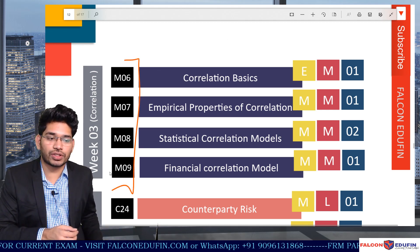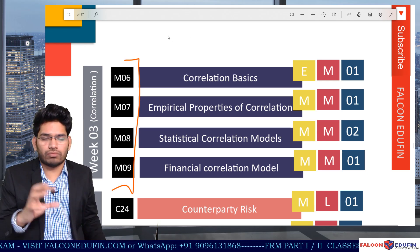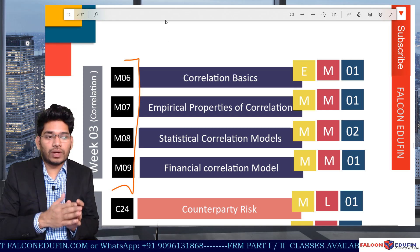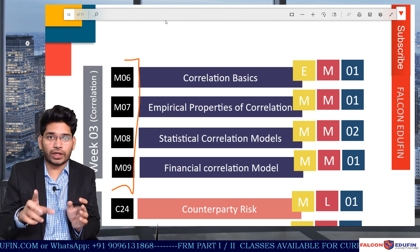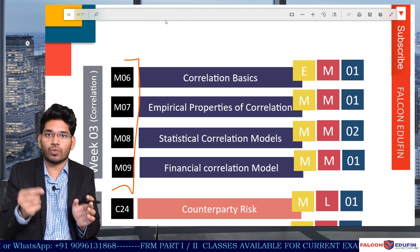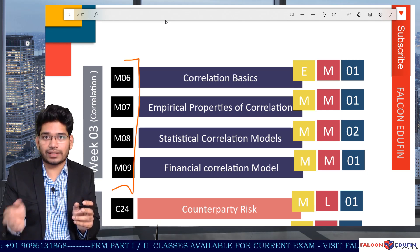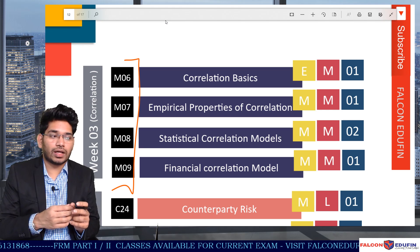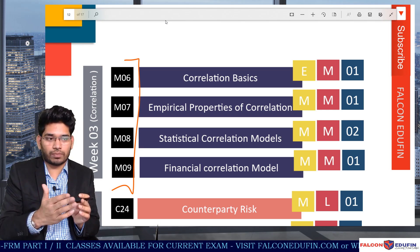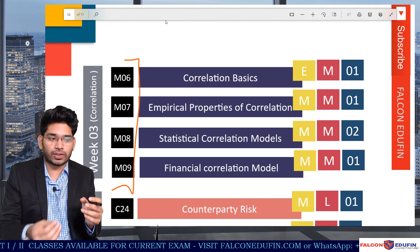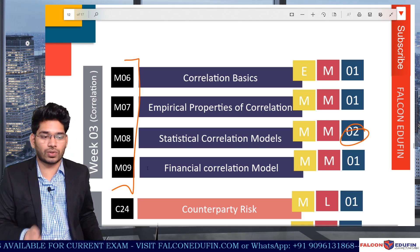Then we have the correlation section, which falls under market risk — four topics on correlation where you should expect around three direct questions. In market risk overall, you will get 20 questions across 14 topics, meaning some topics generate more than one question while others may have none. For basic topics I assign one expected question; for very important topics, two expected questions.